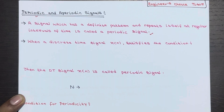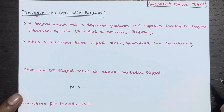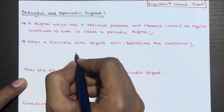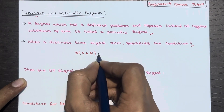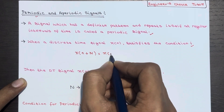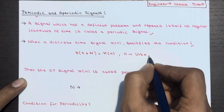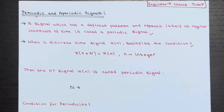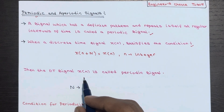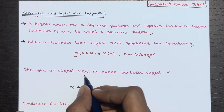When a discrete time signal X(n) satisfies the condition X(n + N) = X(n), where N is an integer, then the discrete time signal X(n) is called a periodic signal.